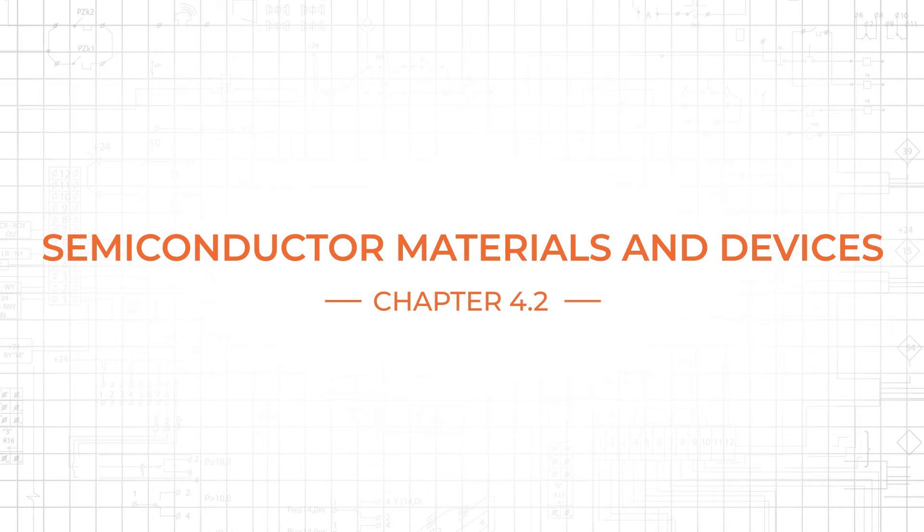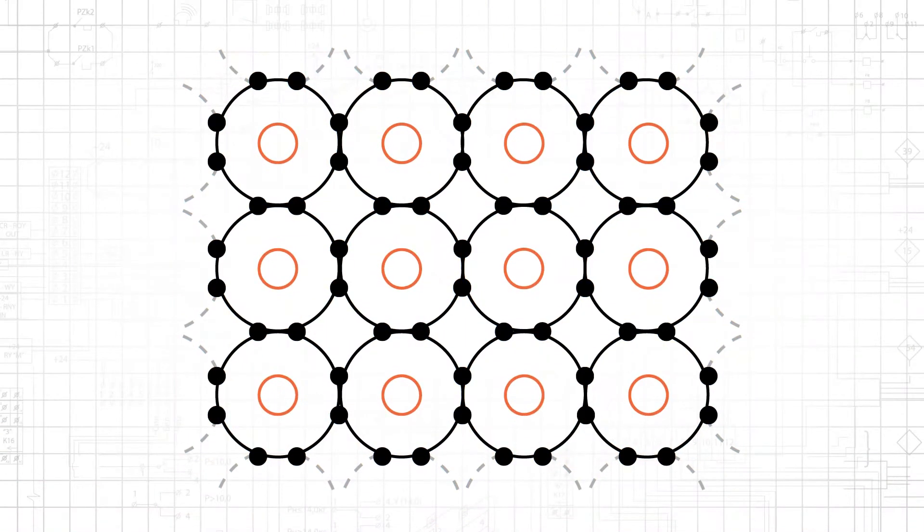On its own, a semiconductor is rather unremarkable. It is simply a material that exhibits mediocre conductivity. It's less conductive than a conductor, but more conductive than an insulator.